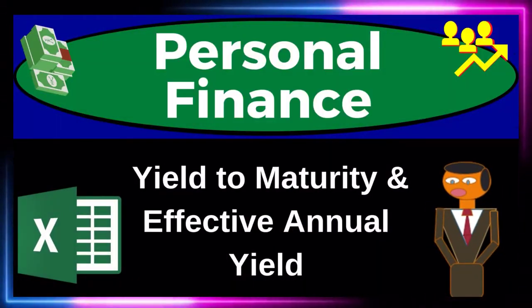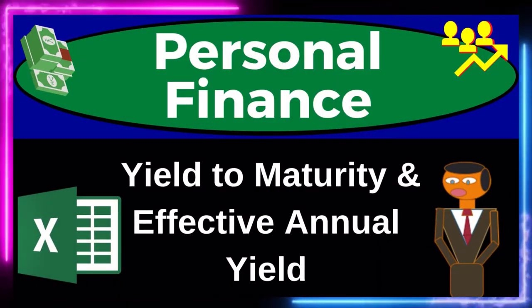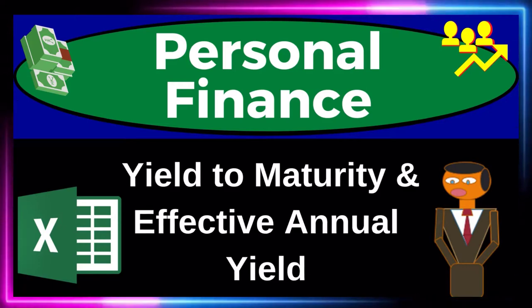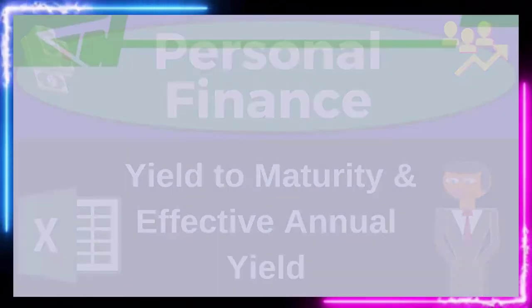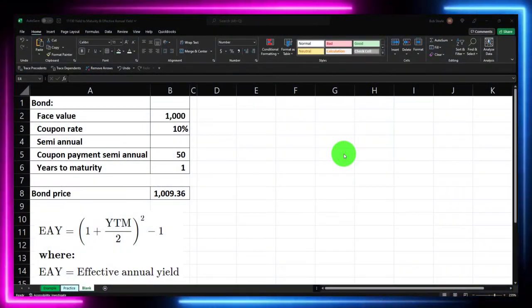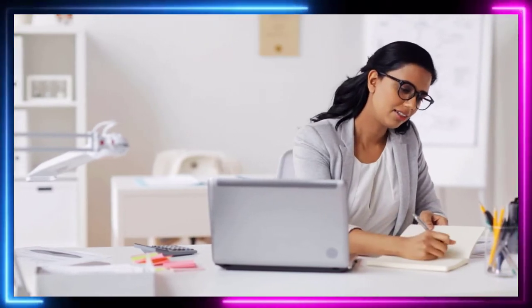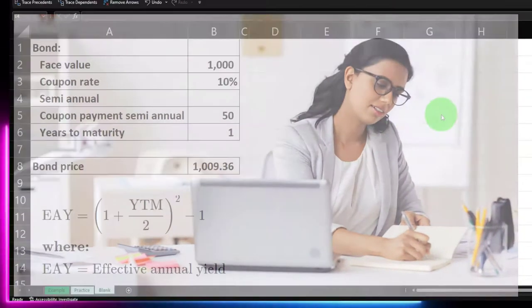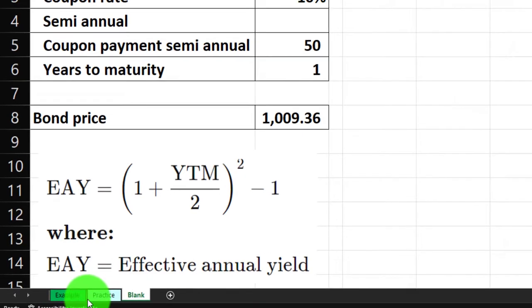Personal finance practice problem using Excel: yield to maturity and effective annual yield. Here we are in our Excel worksheet. If you don't have access to it, that's okay because we'll basically build this from a blank sheet. If you do have access, there are three tabs down below: example, practice, and blank.